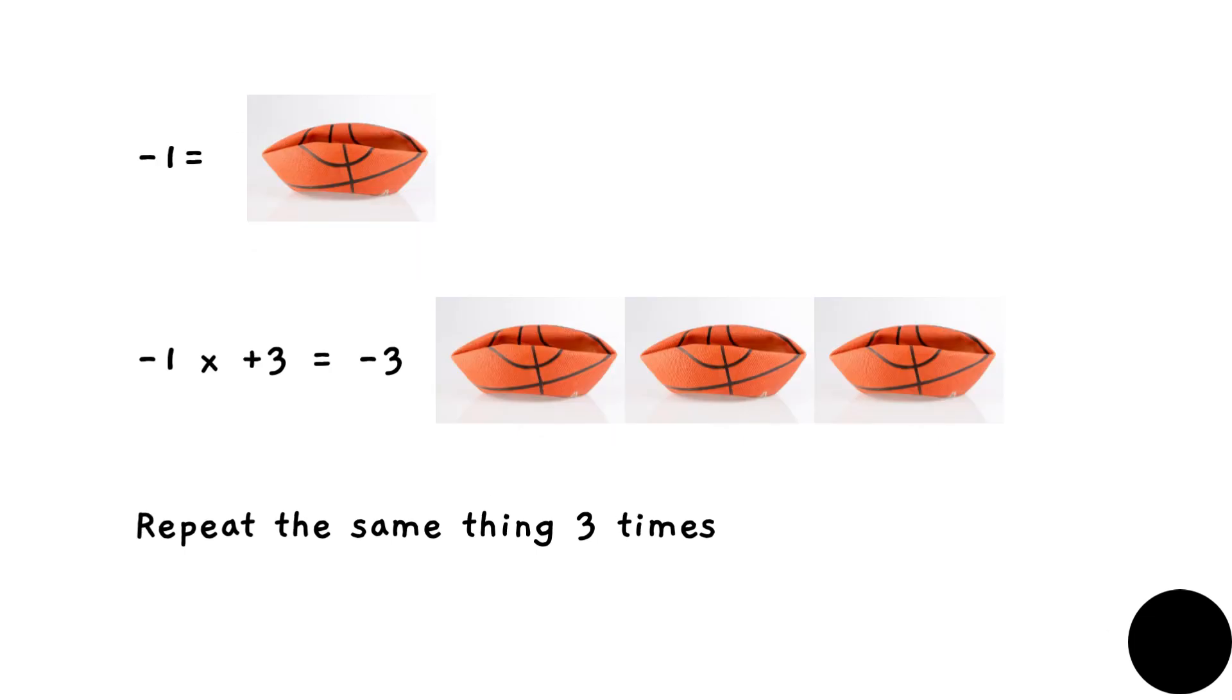Now here, minus one means a ball which is deflated, and then if minus one we have to multiply by plus three, same thing we have to repeat the minus one process three times. So you take the deflated ball and you repeat it three times. So we have three deflated balls.